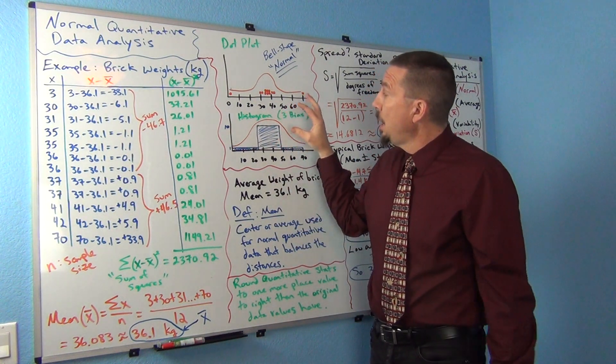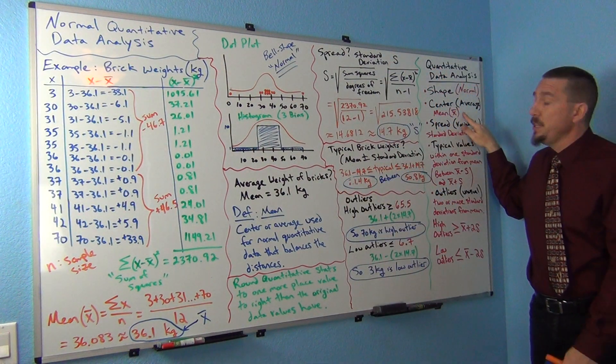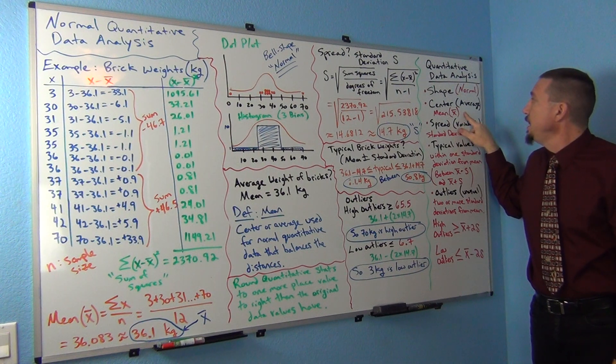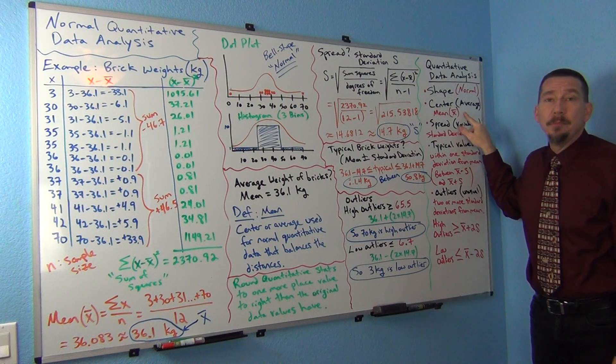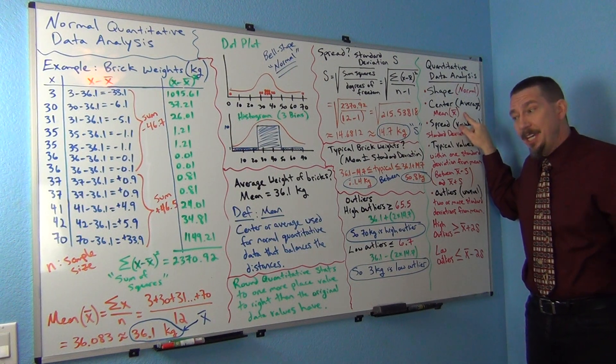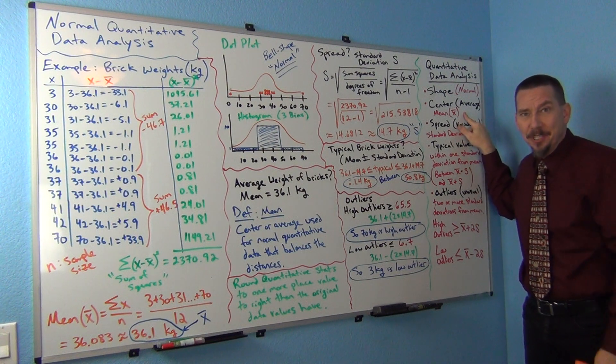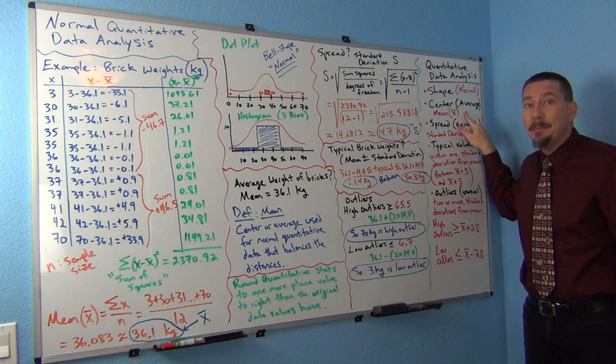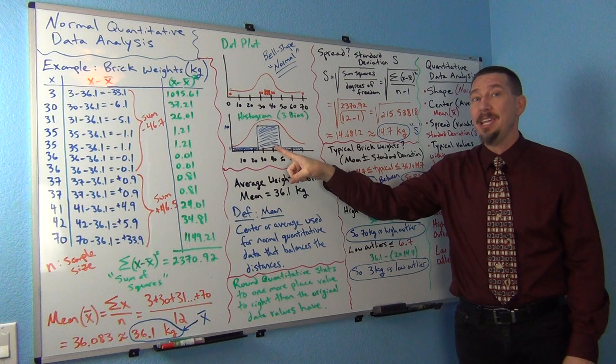Now, for the normal data, the statistic that's accurate for the average or center is the mean. The mean average. This is the most common average. This is the one that most people know about. When you ask people to take your average, they're usually going to add up the numbers and divide by how many numbers were in the data set. It is the most common average.